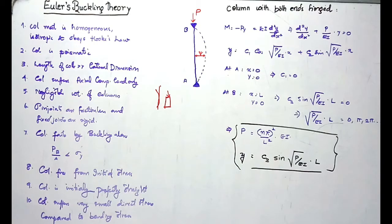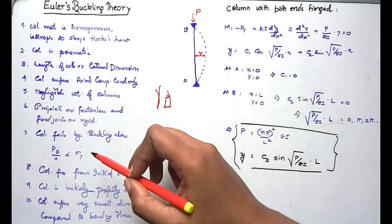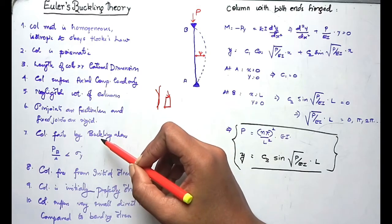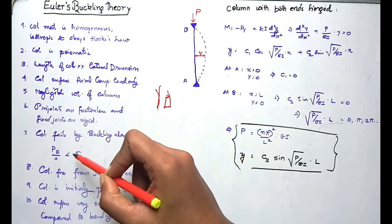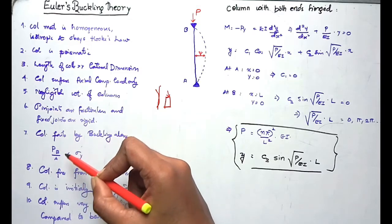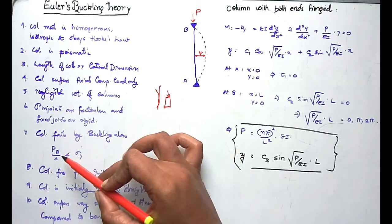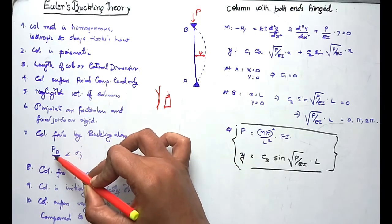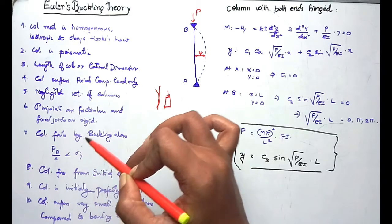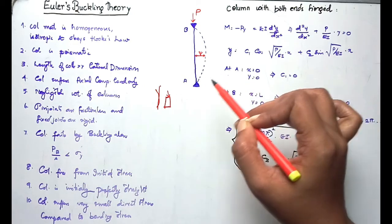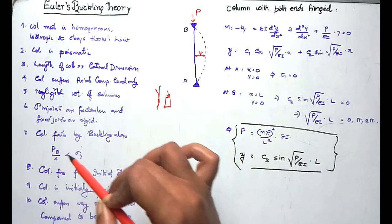Column will first fail by buckling. So P_b divided by A is the buckling stress, which should be less than the yield stress. For example, if yield stress is 100 MPa and buckling stress is 90 MPa, the column fails by buckling first.